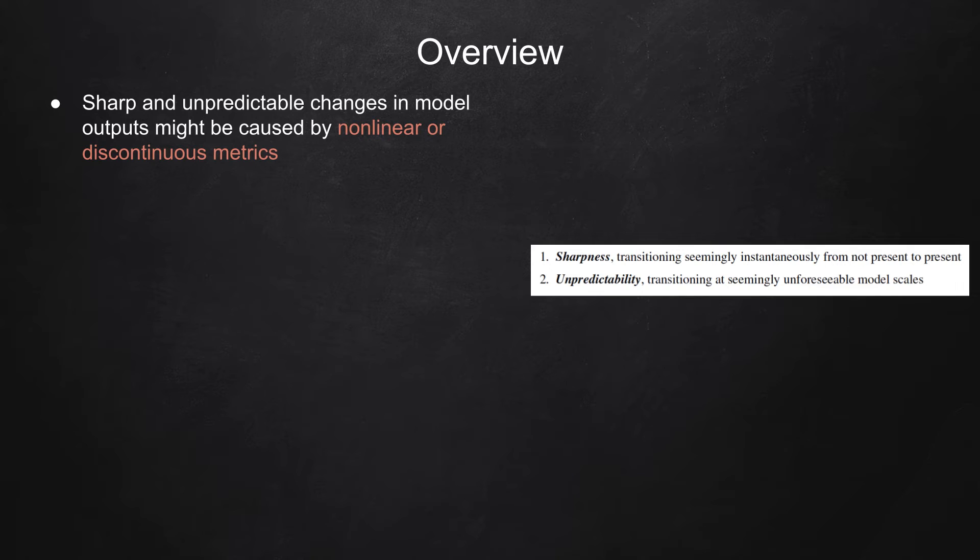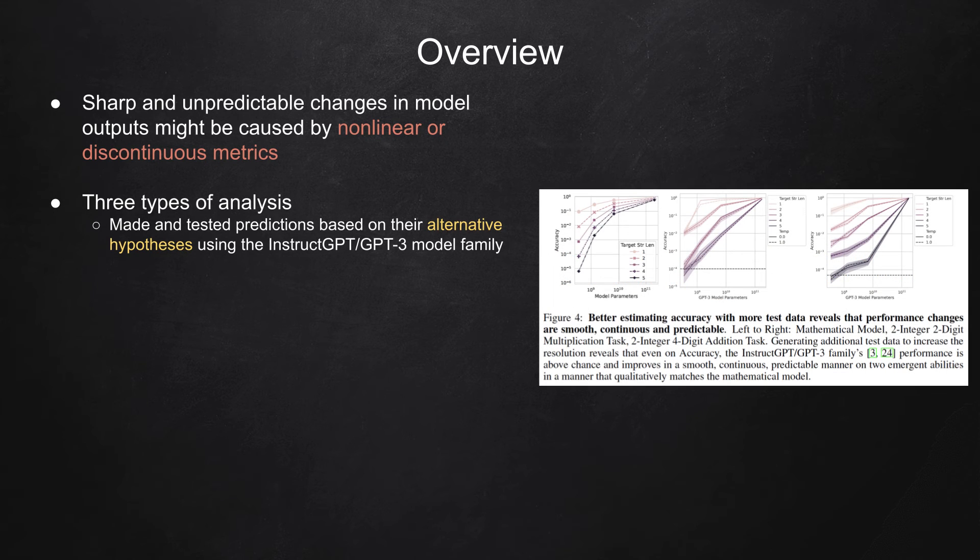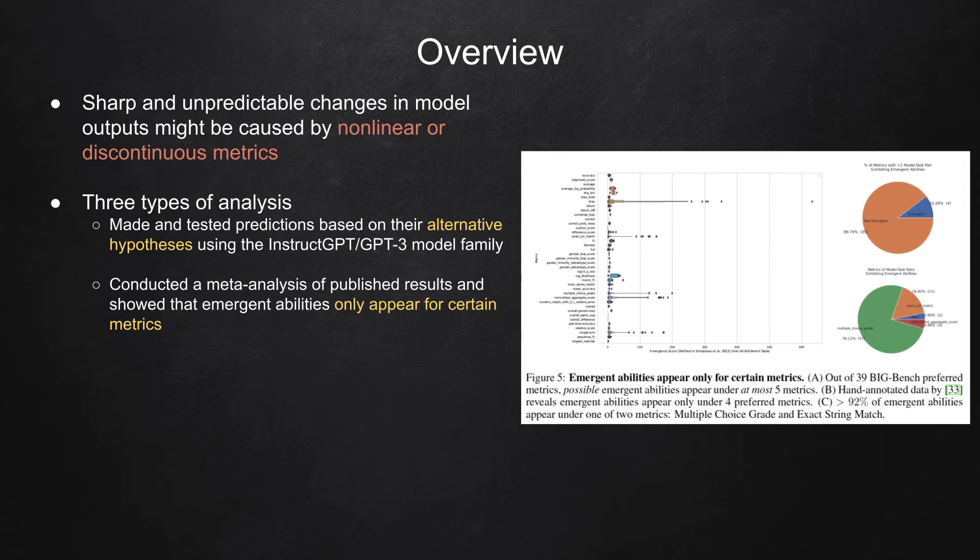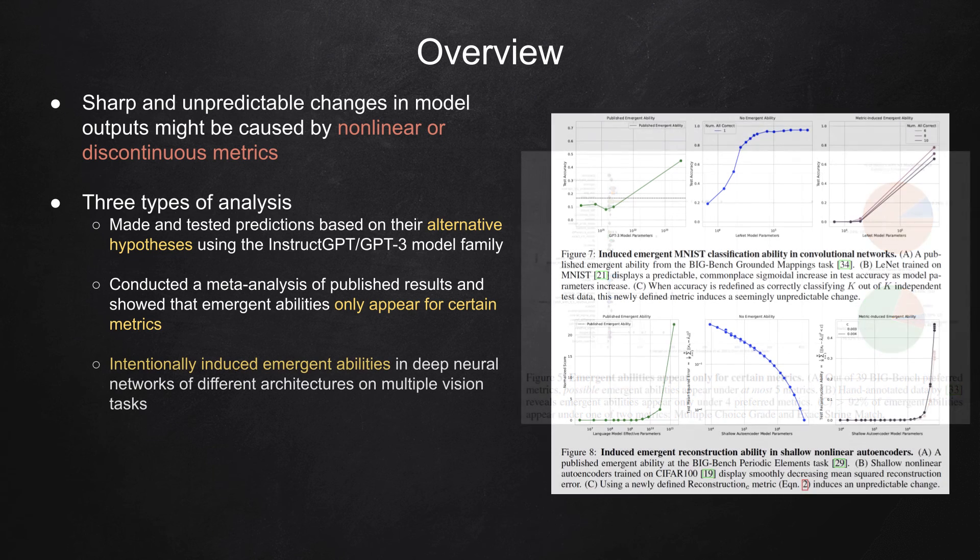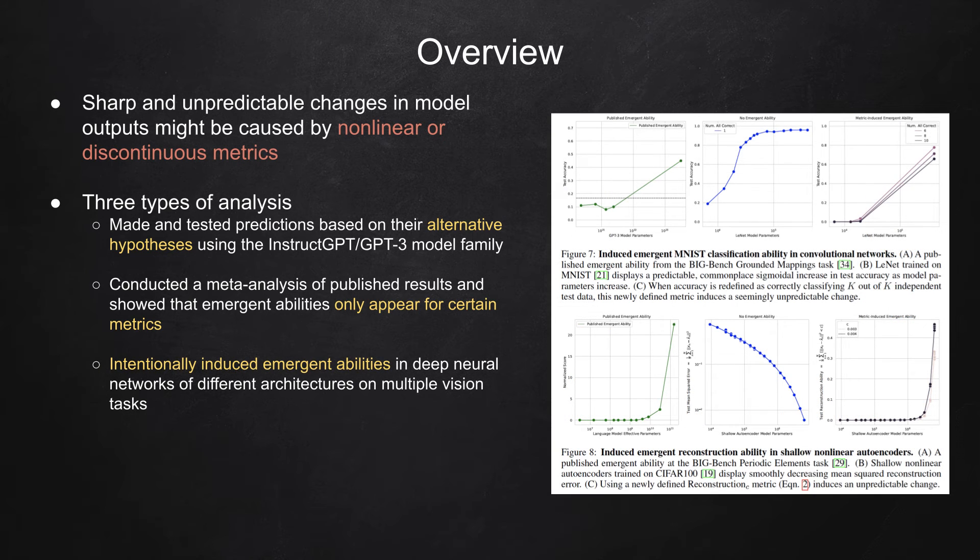To test their alternative explanation, the researchers conducted three types of analysis. First, they made and tested predictions based on their alternative hypothesis using the InstructGPT and GPT-3 model family. Second, they conducted a meta-analysis of published results and showed that emergent abilities only appear for certain metrics. And lastly, they intentionally induced emergent abilities in deep neural networks of different architectures on multiple vision tasks.